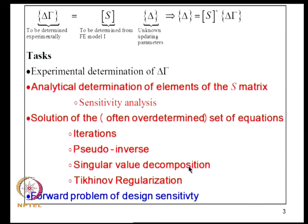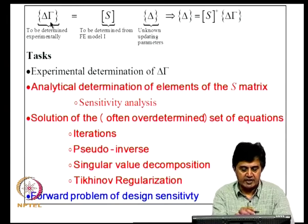This problem is notably different from the forward problem of design sensitivity, in which we impart certain changes to system parameters and ask what would be the change in response characteristics. That is the objective of a forward sensitivity problem. But here we are using the idea of sensitivity analysis in the inverse way: we have seen that certain changes have taken place in the system response characteristics and we don't know what changes in system parameters caused those changes. We use the same equation to find delta instead of delta gamma as in forward design sensitivity analysis.